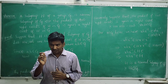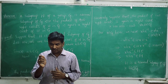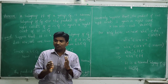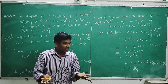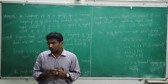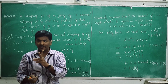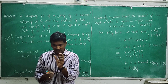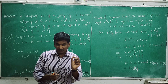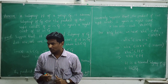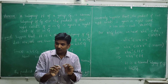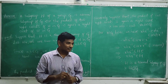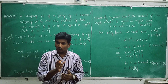Right cosets — we have already discussed. We can take any element from G and operate it with H to form a right coset. Here we take any two right cosets, say Ha and Hb, for all a, b belonging to capital G. These two are right cosets.